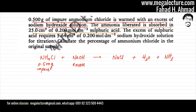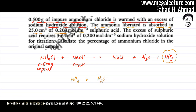Let's focus on the second statement: the ammonia liberated is absorbed in 25 cm³ of 0.2 mol per dm³ sulfuric acid. So whatever amount of ammonia is produced, that ammonia is now being absorbed by — reacting with — H2SO4. The salt produced is ammonium sulfate, (NH4)2SO4. Balancing gives 2 NH3 + H2SO4 → (NH4)2SO4.